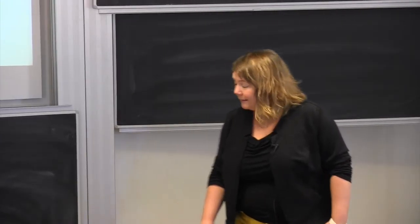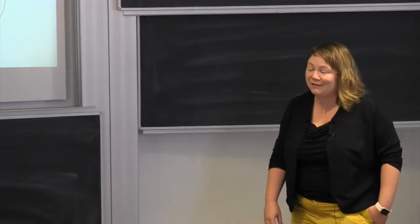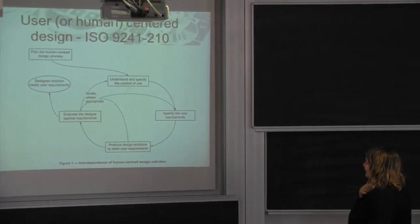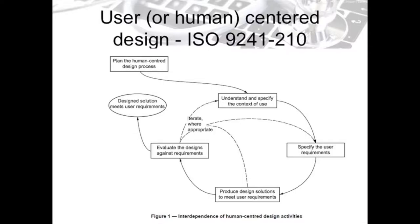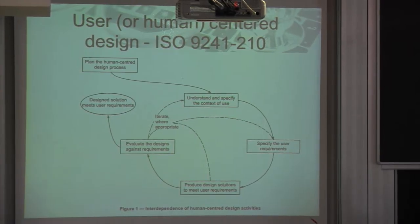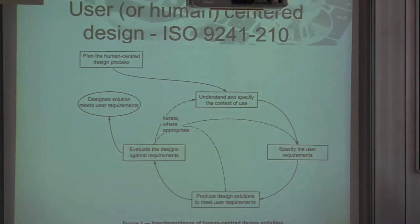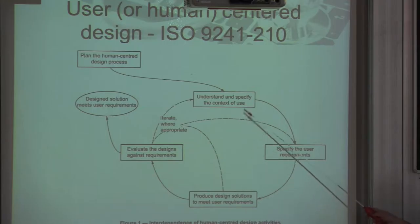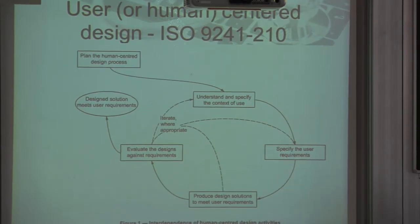I thought I'd start with the human-centered design process, which is standardized and well acknowledged. It provides a good framework when we talk about patient-centered health informatics as well, because it states that it's very important to understand and specify the context of use when developing IT systems. We need to specify user requirements, produce design solutions to meet those requirements, and then evaluate the designs against the requirements in a very iterative approach. In participatory design, this also means involving users at all stages throughout the development process.